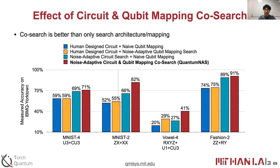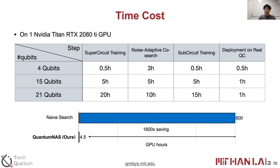We also performed an ablation study of performing noise-adaptive search for architecture only, or for qubit mapping only. The results show that co-search of architecture and qubit mapping provides the best accuracy over searching only one of them. The table shows the time cost of each step on one NVIDIA GPU. Comparing naive search with QuantumNAS, we can reduce the search cost from over 800 GPU hours to only 4.5 GPU hours. We emphasize that the whole pipeline of QuantumNAS can be performed on a real quantum machine, where super circuit and sub-circuit training can be done with parameter shift.